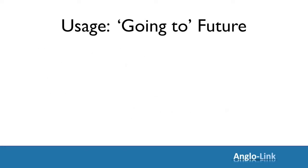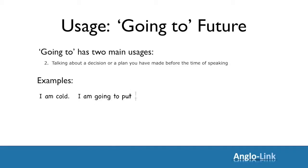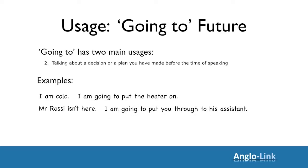The second usage of the going to future is when you talk about a decision or a plan you have made before the time of speaking. For example: I'm cold — I'm going to put the heater on. Mr Rossi isn't here — I'm going to put you through to his assistant. I know you want to see the town — I'm going to show you around.